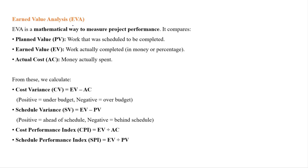Earned Value Analysis, or EVA, is a mathematical way to measure project performance. It compares planned value, earned value, and actual cost. Planned Value (PV) is the work that was scheduled to be completed — meaning how much work was supposed to be done in a given time.